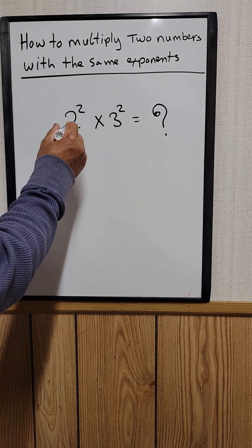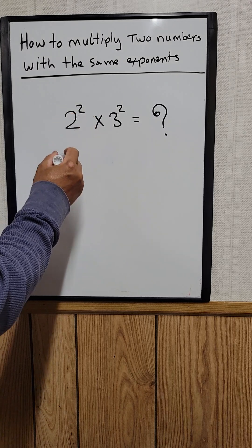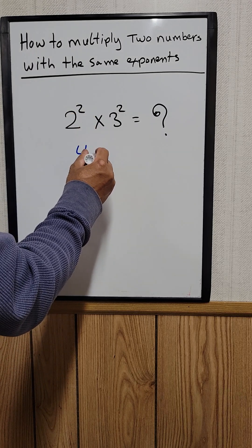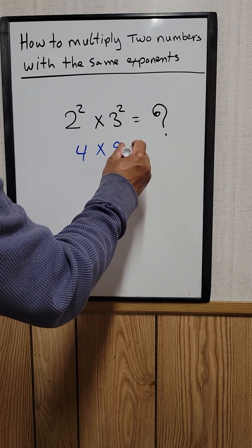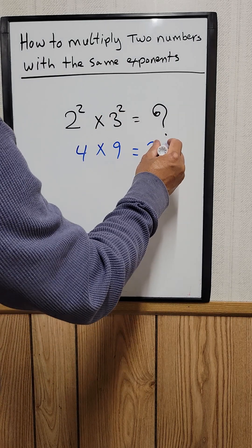One way to do this would be just to simplify 2 squared. What is 2 squared would be equal to 4 times what is 3 squared would be equal to 9. So 4 times 9 would be 36.